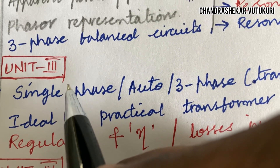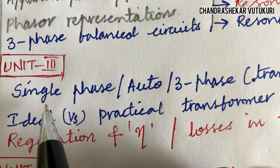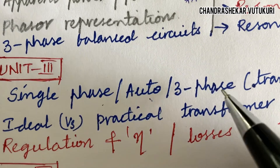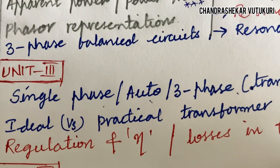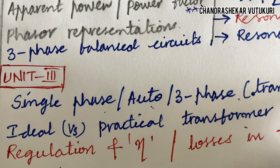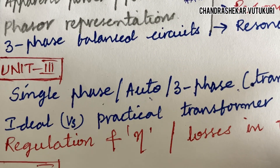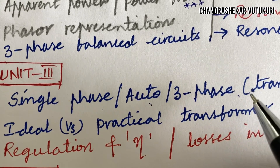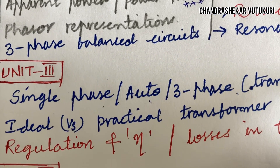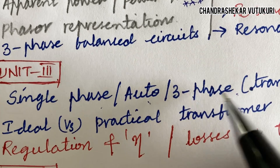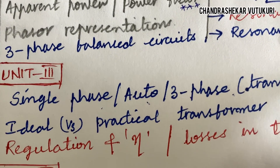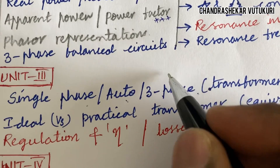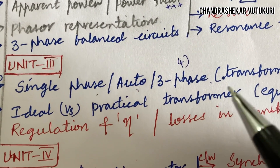Unit 3 is very short in its structure. You are supposed to work out the construction and working principle of single-phase, auto, or three-phase transformer connections. From this part you will be getting short questions — there are no separate short questions from Unit 3, dear students, so you need to learn all the concepts in depth. You may get a 1-mark question or directly a 10-mark question from transformer connections along with problems. Ideal versus practical transformers is said to be one of the short and long questions coming in question 4.